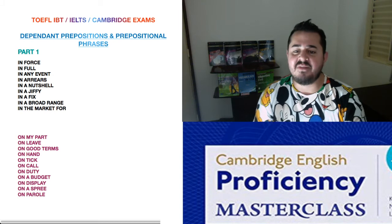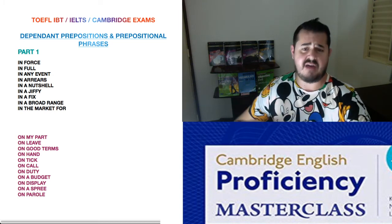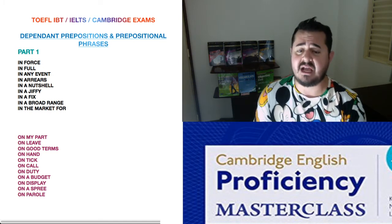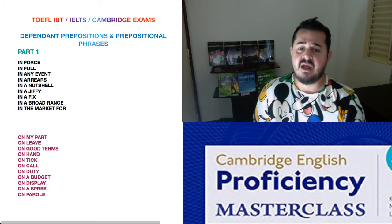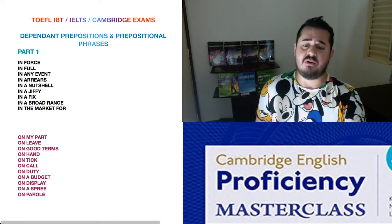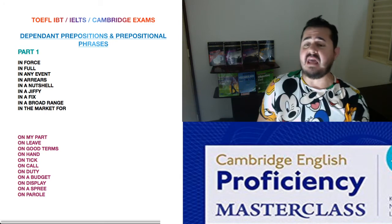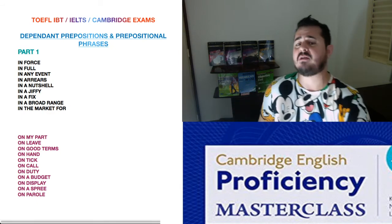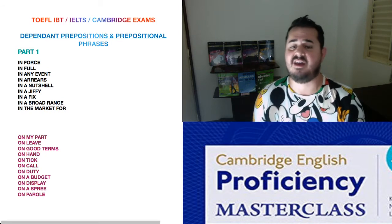The next expression is 'on leave.' If I'm on leave, it's a kind of license where I can be off — a day off, a week off, a month off, depending on what I agree with my company. There are two types of leave: paid leave, where you stay home and get paid, such as when you have children or due to illness; and unpaid leave, where you stay home without getting paid.